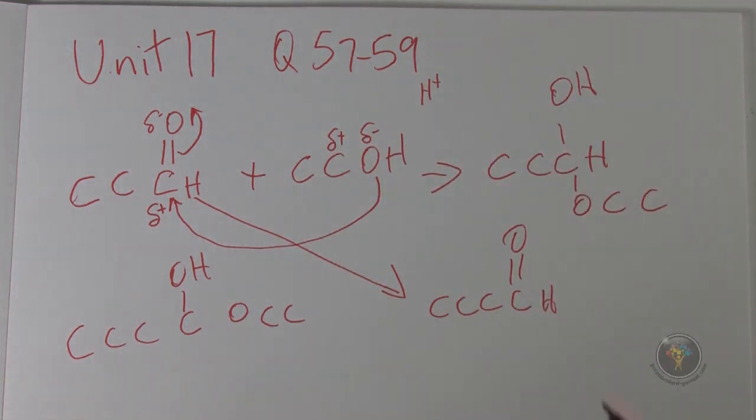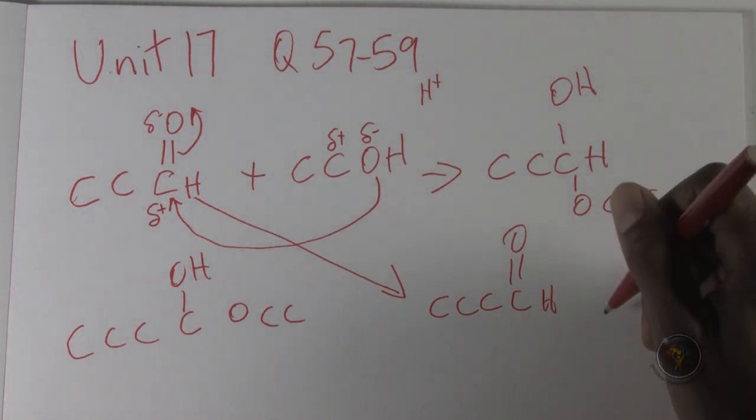—we will need butanil, so four carbons there, and with the ethanol in the same reaction, which would create the same attack of this central carbon and the OH group there. So butanil and ethanol is answer choice 58C.